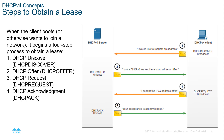DHCP Discovery is done by broadcast from the client — essentially asking for an address. The server sends a DHCP Offer as a unicast: 'I am the server, here is an address offer.' The client receives the offer and sends a DHCP Request as a broadcast, accepting the offer. The server accepts the request and sends an Acknowledgement as a unicast back to the client. That is DORA — how a client requests an address.